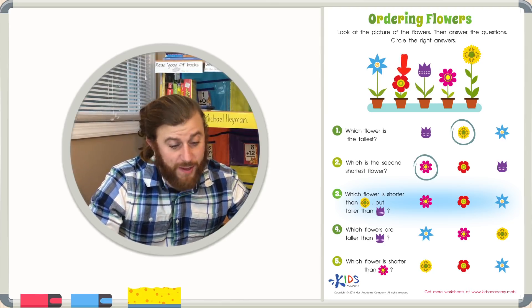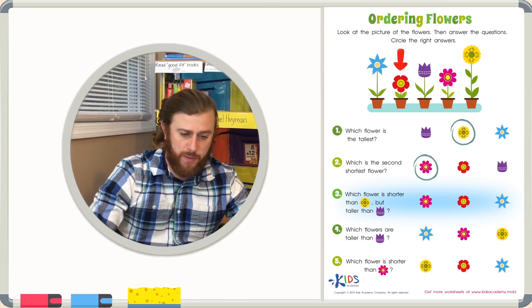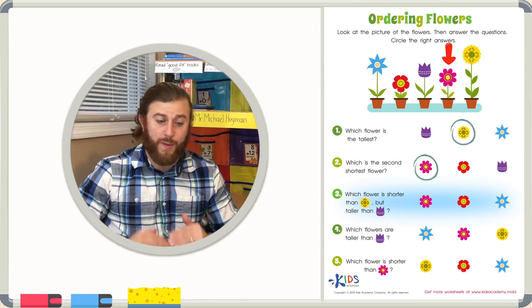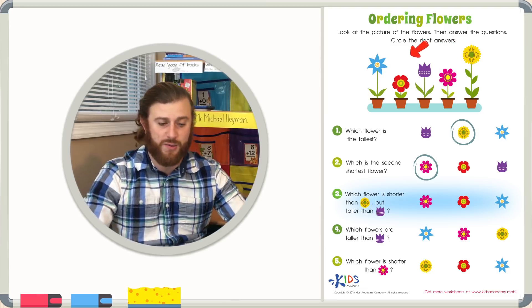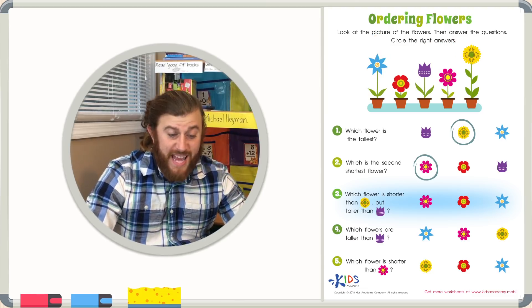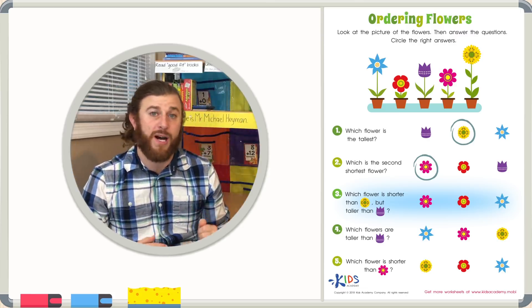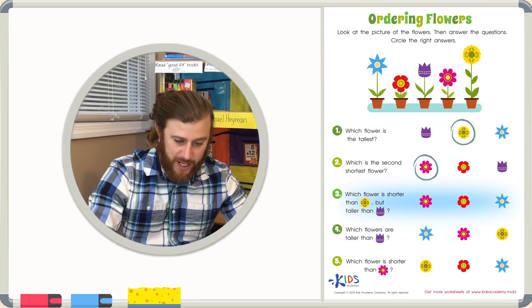Well, we know it's not the red flower because the red flower is the shortest. We know it can't be the pink flower because that's shorter than the purple flower. That leaves us with the blue flower. The blue flower is shorter than the yellow flower, but it is taller than the purple flower. The blue flower is the correct answer choice.